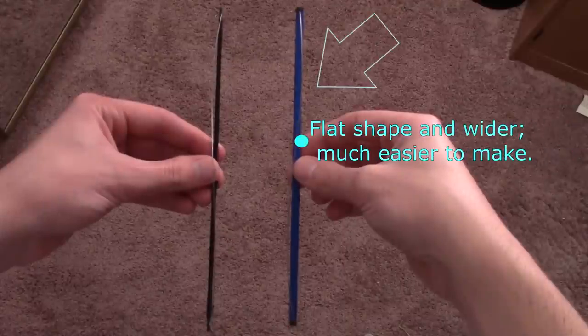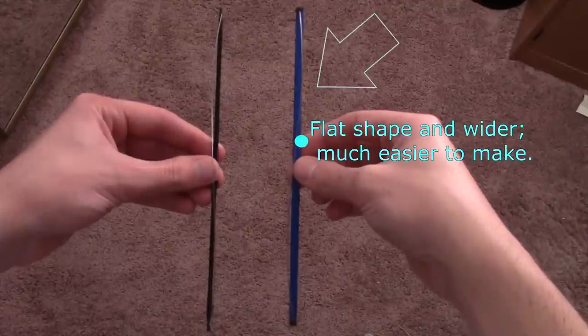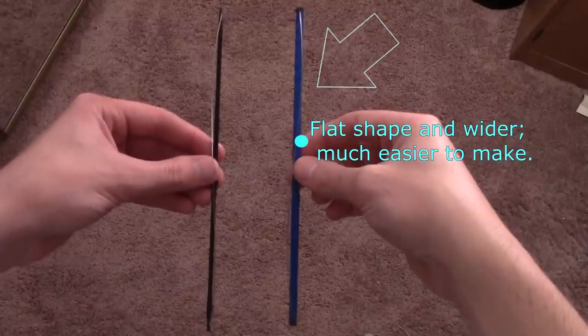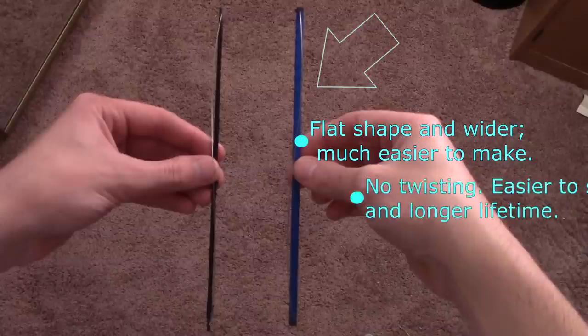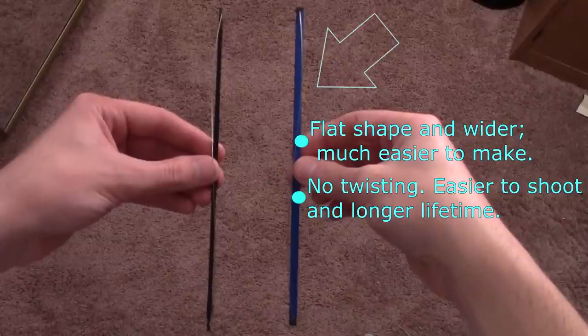This bow uses a different carbon fiber rod that's wider than the original version, and it's also flat as compared to round, thus making it a lot easier to make. The flatness of the rod makes it so the bow doesn't twist as you pull it back, making it easier to shoot and extending its lifetime. It's also better suited to be a limb for the mini crossbow that this video is preparing you for.